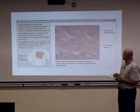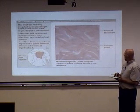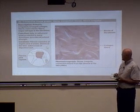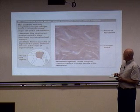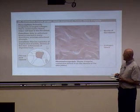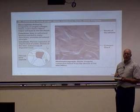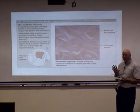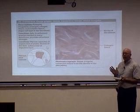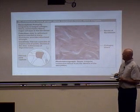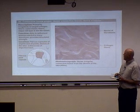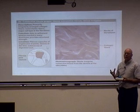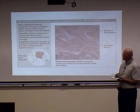Here is dense irregular connective tissue. It's primarily composed of collagen fibers with fibroblast cells present. It has a lot of strength and tension, but is arranged in a more random fashion rather than just one linear direction. This tissue is often found in joints, allowing for strength and tension in multiple directions.